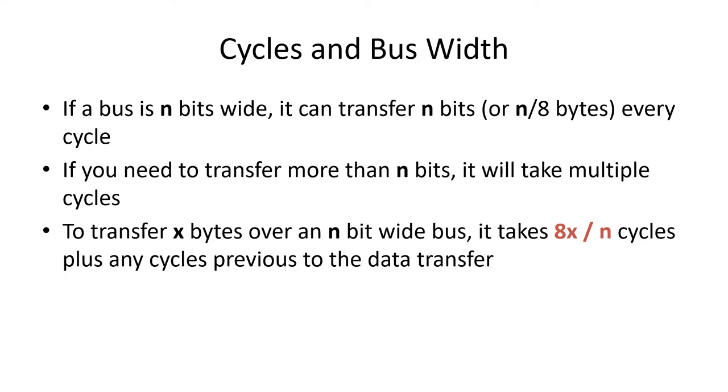We talk about transferring information across the bus. Buses are usually measured in how many bits wide they can transfer in a single cycle. We usually refer to data in bytes. There are 8 bits per byte, so divide the number of bits being transferred by 8 to get bytes per cycle. Then divide the bytes you want to transfer by bytes per cycle to get how many cycles it takes.